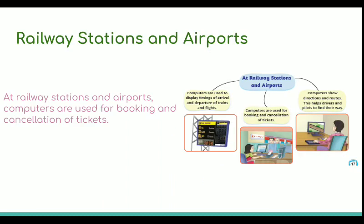At railway stations and airports, computers are used for booking and cancellation of tickets. You can also know about the timings and the direction of the train and the flight. At one place, all information can be obtained at a time.